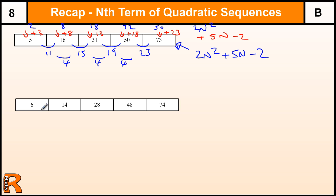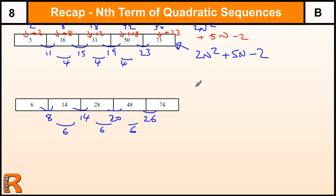One last one to finish with. This is going up by 8, then 14, then 20, then 26. And those common differences are 6, 6, and 6. So in our 2n squared sequence the common difference is 4, and when it's 6 each time that tells us it's a 3n squared sequence. So if I write 3n squared down: 3, 12, 27, 48, 75.